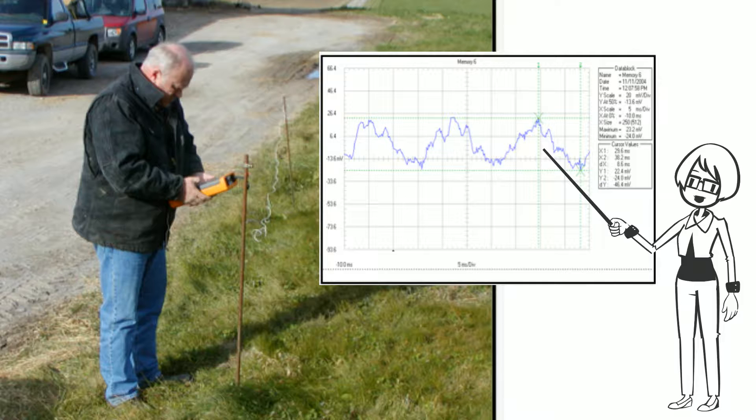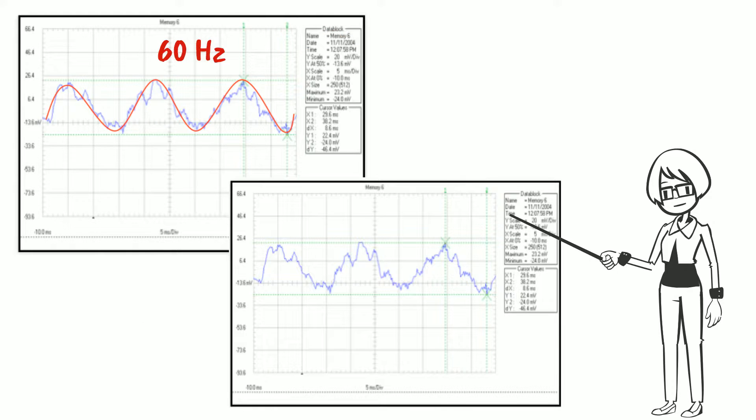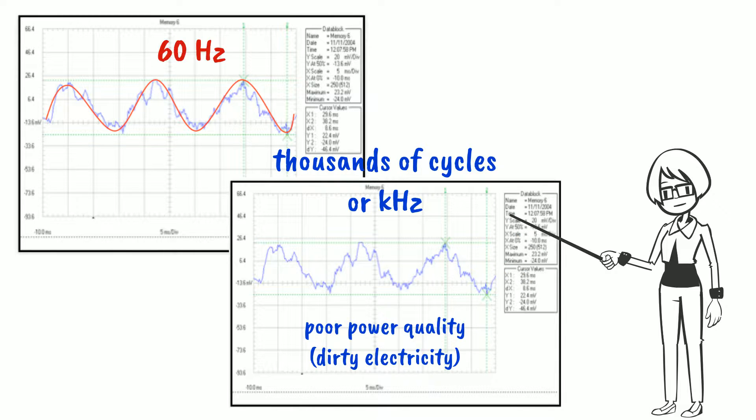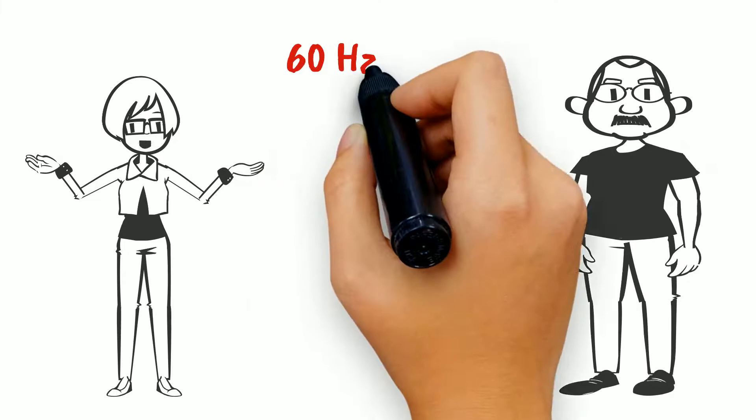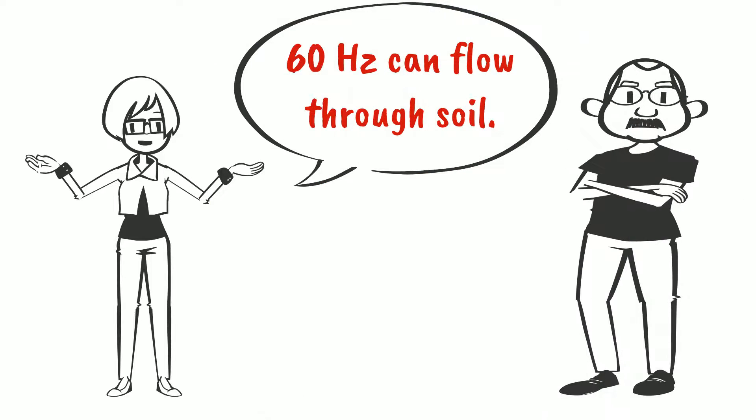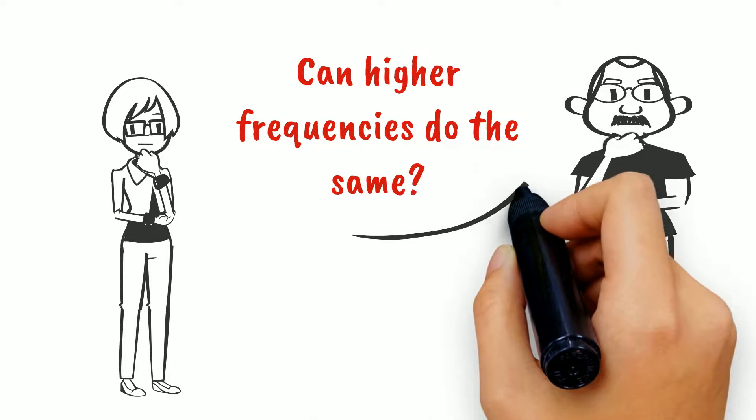Remember when I showed you in the first video what electricity flowing through the ground looks like? Two patterns were evident: the 60 cycle or 60 hertz pattern shown in red, and the thousands of cycles or kilohertz pattern shown in blue. Ralph did a demonstration of ground current and showed that 60 hertz frequencies can flow through soil. Can higher frequencies do the same? Watch our next video and find out.